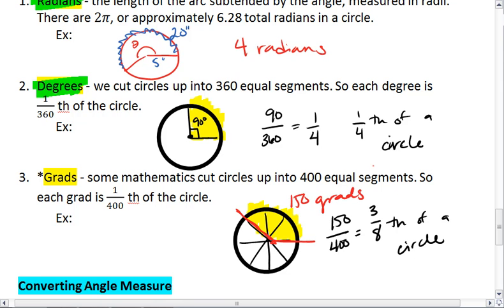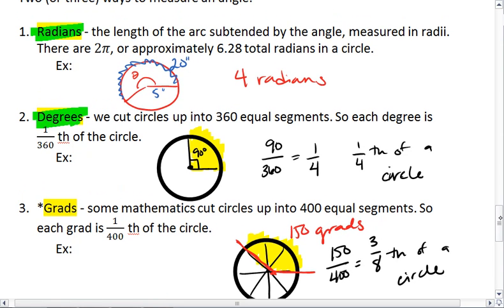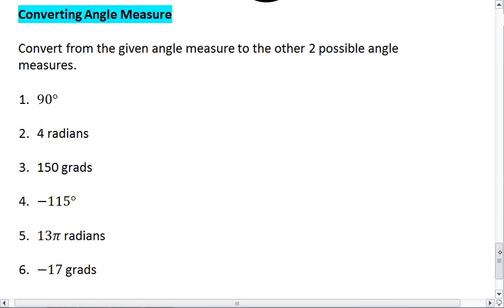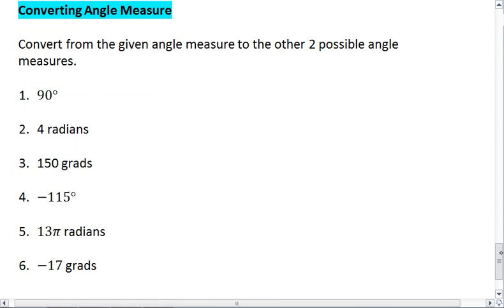What you really need to know, and you need to have fully understood, is that there are a total of 2π radians and 360 degrees in a full circle, and this will be important. Because next we're going to talk about converting angle measure.